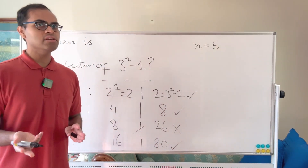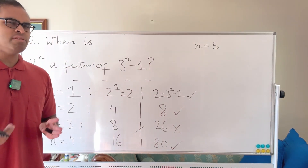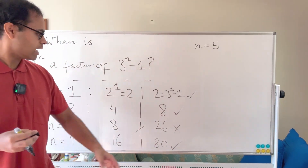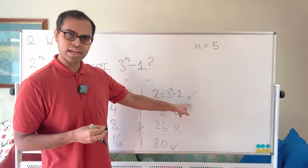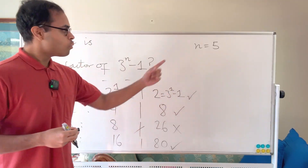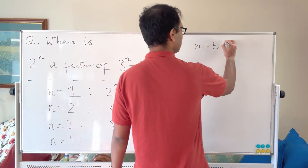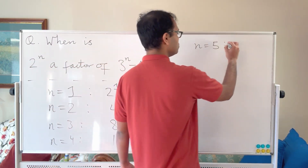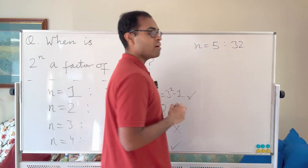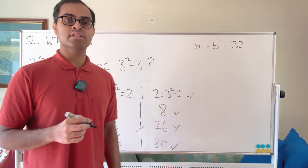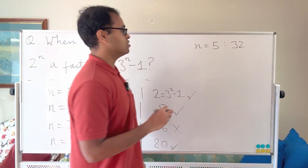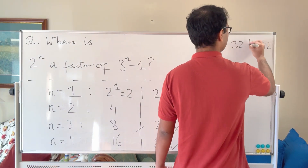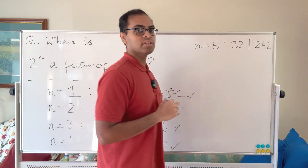You might wonder: is it true for all even values of n and false for all odd values? Well, n equals 1 is true. For n equals 5, 2^5 is 32 and 3^5 minus 1 is 242. But 32 does not go into 242, so it fails for n equals 5.